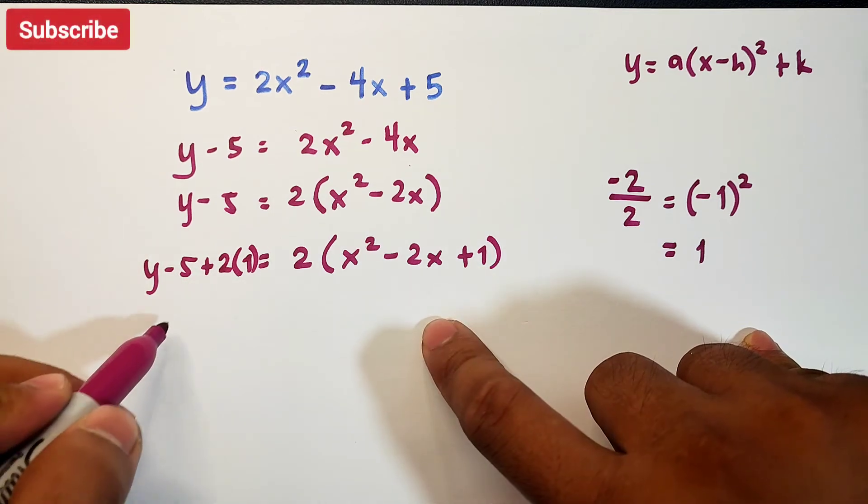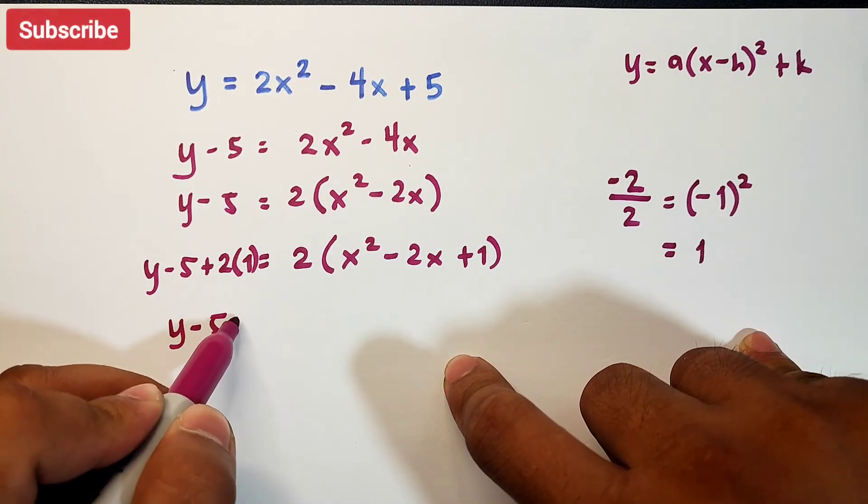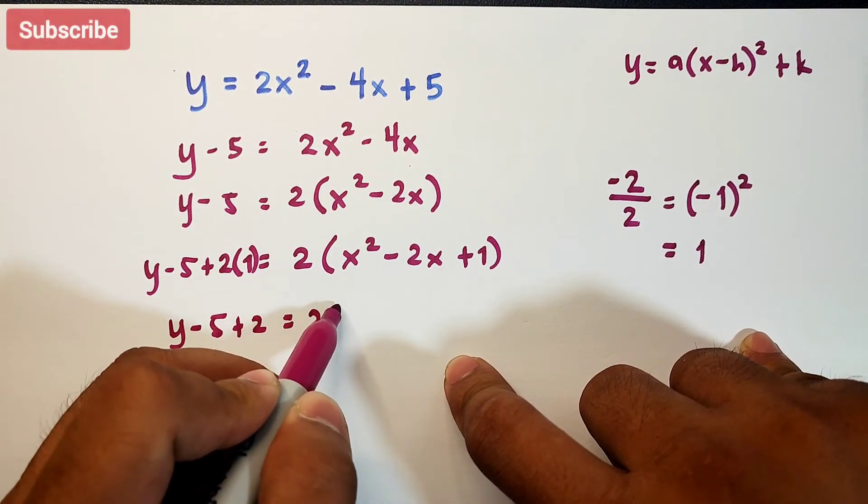Simplify this part. You have y minus 5, 2 times 1 is plus 2, equals 2 times.